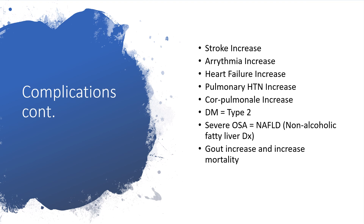There is the possibility of heart failure, pulmonary hypertension, and cor pulmonale — that is when someone has a lung or respiratory problem and the right heart is failing. There is also diabetes mellitus, particularly type 2. Severe obstructive sleep apnea will lead to non-alcoholic fatty liver disease. Gout will be on the increase, and of course there is a likelihood of increased mortality.